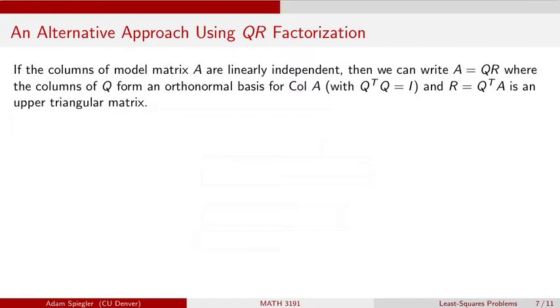Then we also are going to be able to take this matrix A and find its QR factorization because all of its columns are linearly independent, where recall that this matrix Q, the columns of Q form an orthonormal basis for the column space of A. And as a result of all of the columns of Q being orthonormal, when I take the product of Q transpose with Q, we'll get the identity matrix.